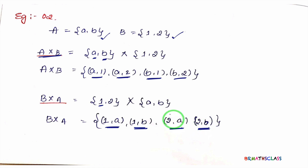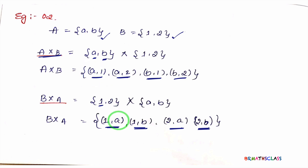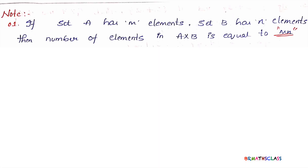So what we learned till now: we learned the definition of Cartesian product of sets and how to calculate A cross B and B cross A. Now we will learn 5 important points in Cartesian product of sets.